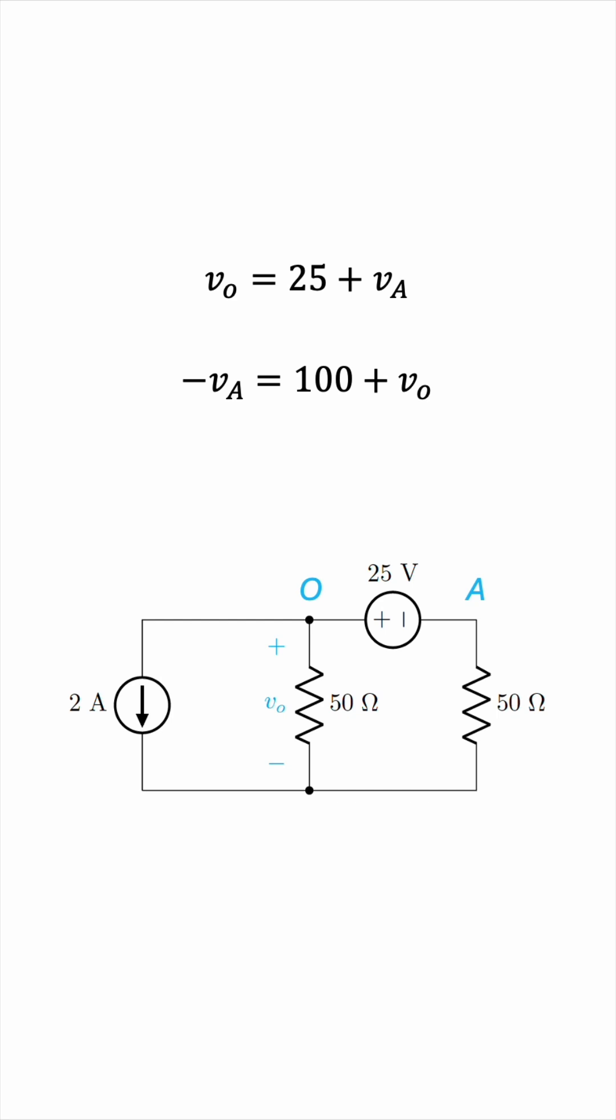Let's rewrite va in terms of vo and then substitute this va in the second equation. Doing so, we get this single equation in vo. And now we can distribute, bring the vo's to one side and the constants to the other, and then divide by two, which will give us vo equals negative 37.5 volts. So that's the final answer.